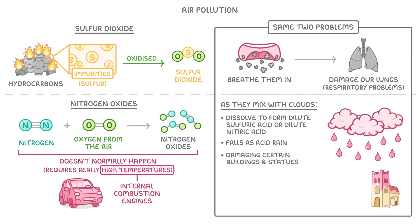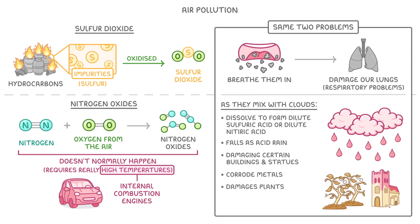As well as damaging certain buildings and statues, and being able to corrode metals, acid rain also damages plants, either by landing directly on the plants, or by making the soil more acidic, which can make it harder for the plants to grow.